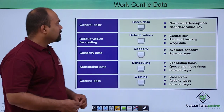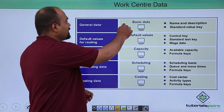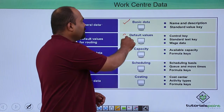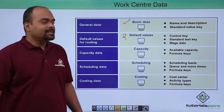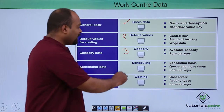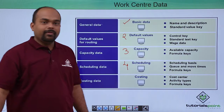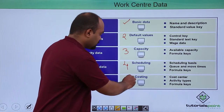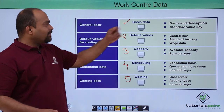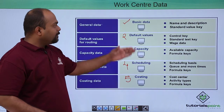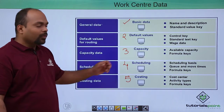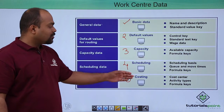First is basic data, second is default values, third is capacity, fourth is scheduling, and fifth is costing. According to that, the basic data view is over there, then default view, then capacity view, then scheduling view and costing view.